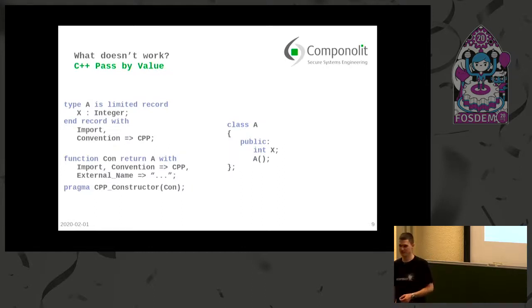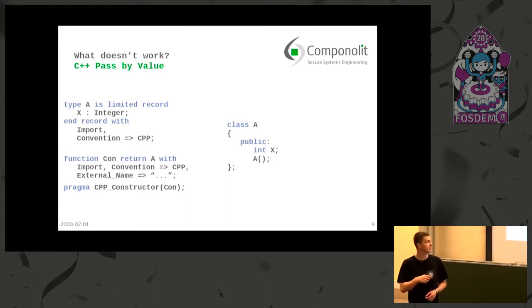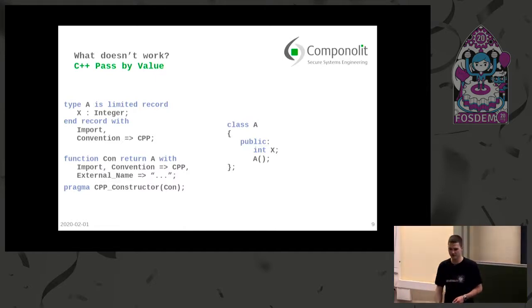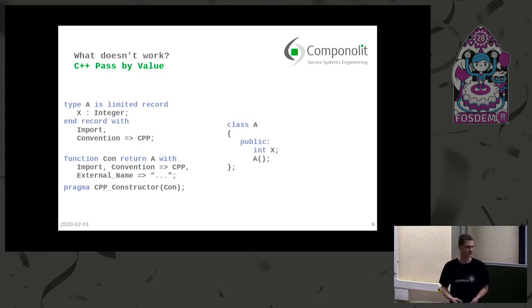The second issue: C++ supports pass by value for anything. You can take a class that is a kilobyte large and just pass it by value. So how do we import a C++ class in Ada? The class itself is a record in Ada with the convention C++, and it must be limited. If you don't add limited, you won't get the constructor — which is a function that returns A but has a C++ constructor. This construct behaves like a function so that it can initialize the limited object, but actually it is a procedure where A is the first argument as an out parameter.